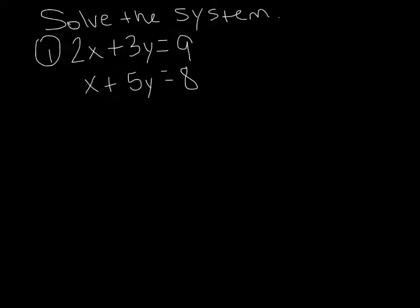Solve the system: 2x plus 3y equals 9, and x plus 5y equals 8. So what you want to do is figure out, is anything going to eliminate? You have 2x and 1x, those won't go away. And 3y and 5y, those won't go away either. So you have to make them eliminate. If I want to eliminate my x's, what do I need to be opposite of 2 in order for it to go away?